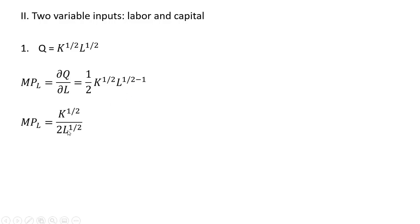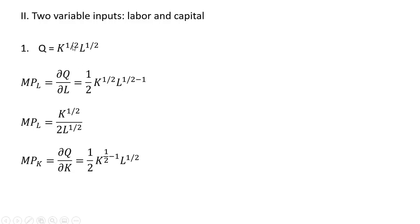Simplifying slightly, that is the marginal product of labor. The marginal product of capital, MP subscript K, is the partial derivative of the production function with respect to capital. The exponent on the K term comes down in front — in this case also one-half — subtracting 1 from the exponent on the K term. Simplifying, we have the marginal product of capital.